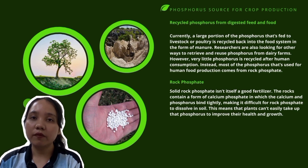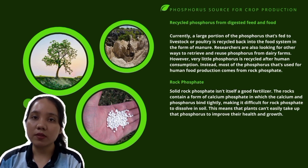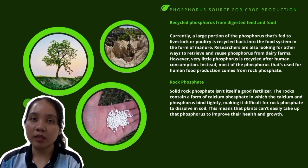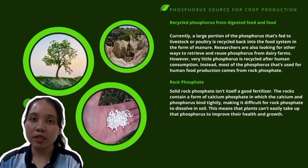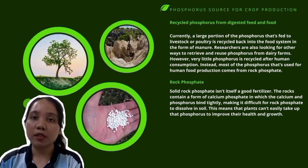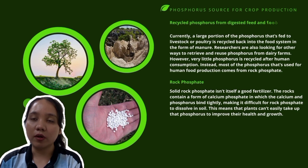The amount of rock phosphate suitable for mining is limited, making this source of phosphorus unsustainable for the long term. In addition, because synthetic phosphorus fertilizers are designed to be water-soluble, phosphorus can easily move from agricultural land into our water supplies.